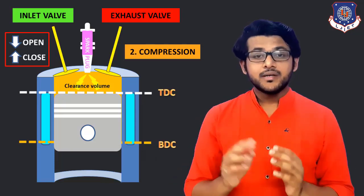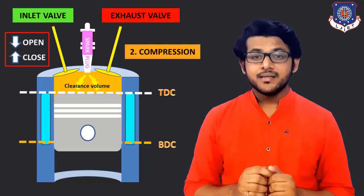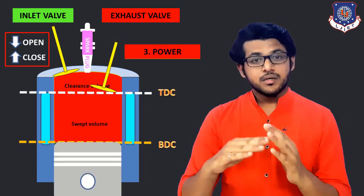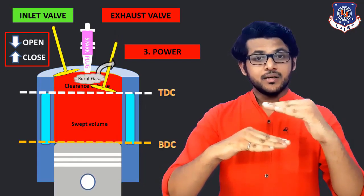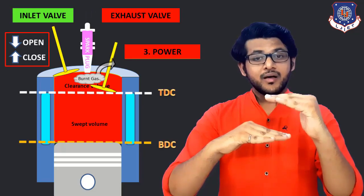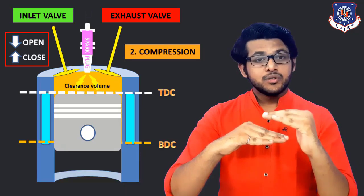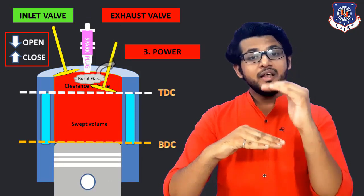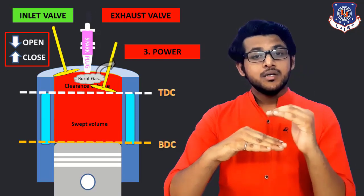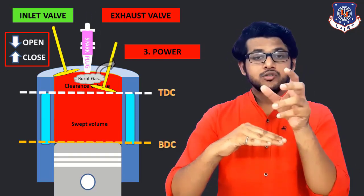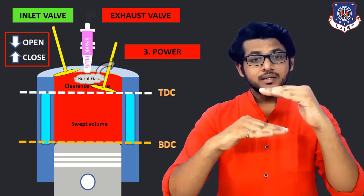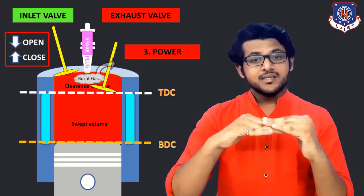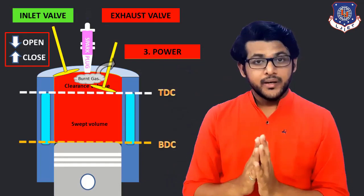Now let me show you the third stroke, that is the power stroke. In this stroke, the piston is moving from TDC to BDC. When the piston is about to reach BDC, the exhaust valve will start opening, because we have to remove all the burnt gases which are already formed after the spark. So when the piston is about to reach BDC, the exhaust valve will start opening, and when the piston reaches exactly at BDC, it is already opened.